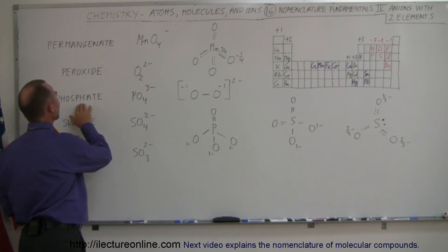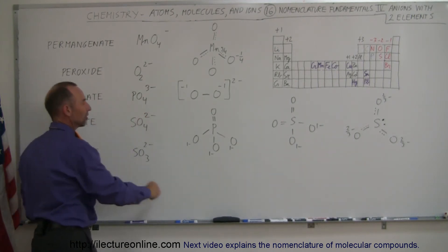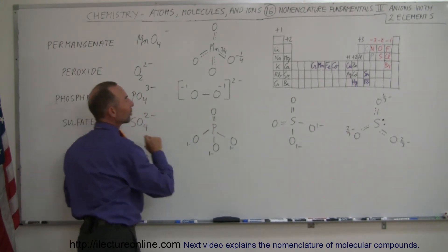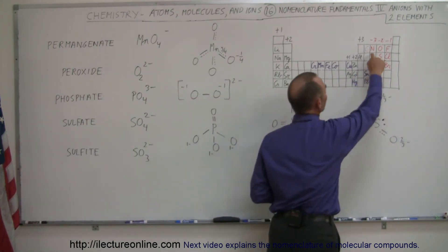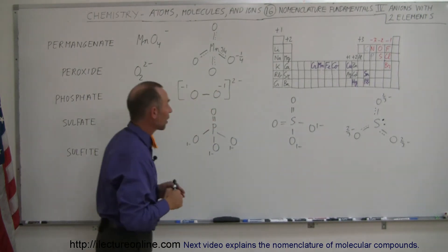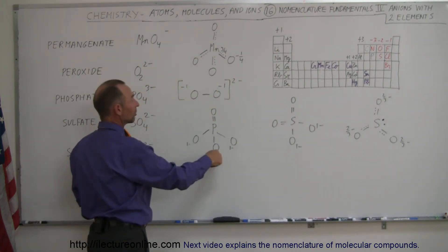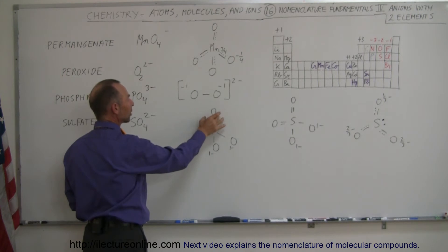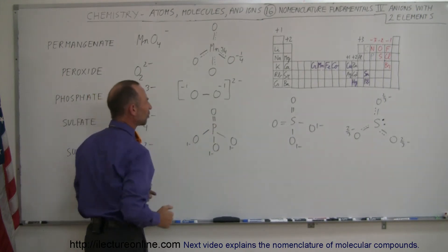We have the phosphate ion, which is PO4 — one phosphorus with four oxygen atoms. Phosphorus, just like nitrogen, has five valence electrons, but it's trying to make four bonds, so the way it's set up is it makes a double bond with one of the oxygens and a single bond with the other three.